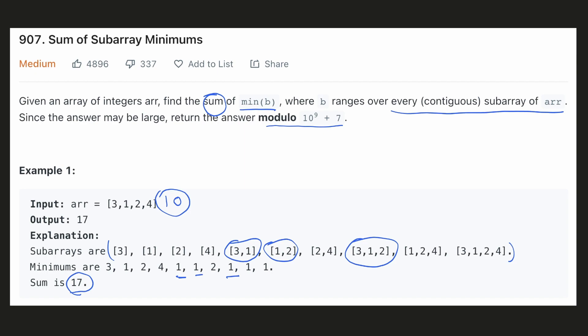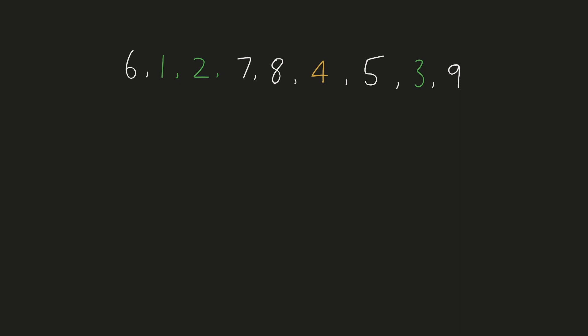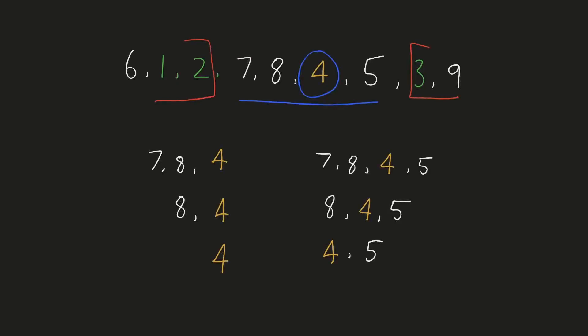Let's try to come up with an intuitive solution. Let's figure out the number of sub-arrays for which an element will be the minimum. If we look at sub-arrays with 4 as the minimum, the sub-array cannot have any element on the left from 2 onwards, because if it contains 2 then 4 cannot be the minimum — 2 itself will be the minimum. Similarly on the right, for 4 to be the minimum, there cannot be an element from 3 onwards, because 3 is lesser than 4. You can notice that 2 is the first number on the left smaller than 4, and 3 is the first number on the right smaller than 4. Hence, the sub-array has to be in this range and must contain 4. These would be all the sub-arrays where 4 is the minimum — 6 sub-arrays in total.